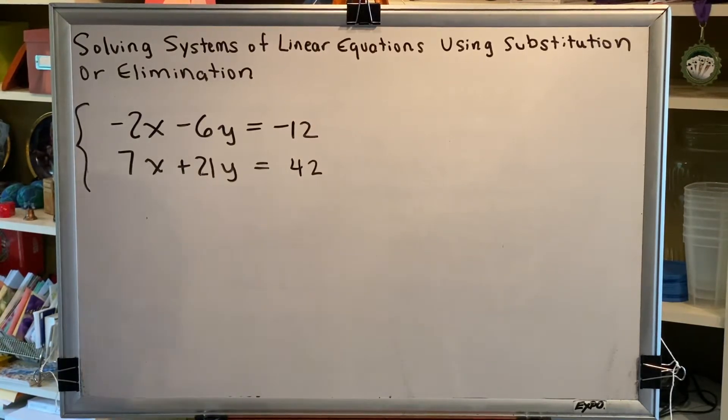Alright, our top equation is negative 2x minus 6y equals negative 12. Our bottom equation is 7x plus 21y equals 42.